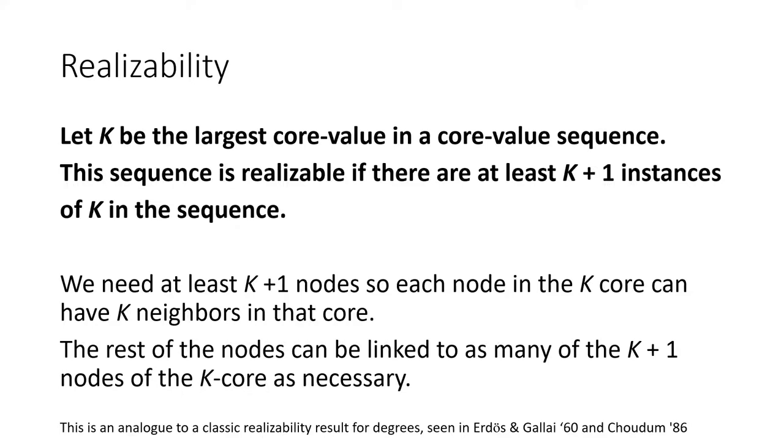So it seems pretty clear that there must be at least k plus one instances of k. And then the rest of the nodes can be linked to as many of the k plus one nodes of the k-core as necessary. For instance, let's pretend k is five. And if we have a node with core value two, we just link it to two nodes in the five core.